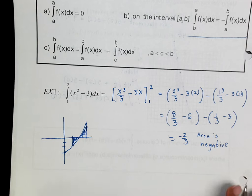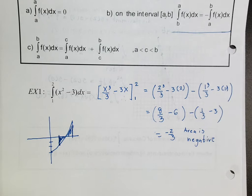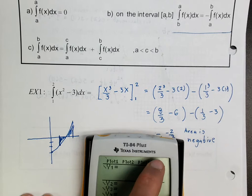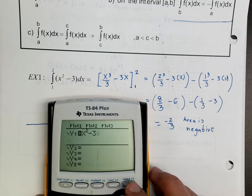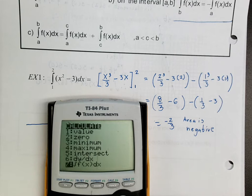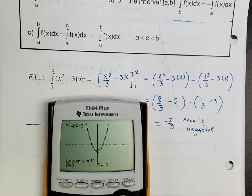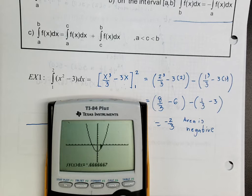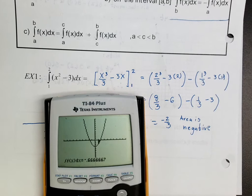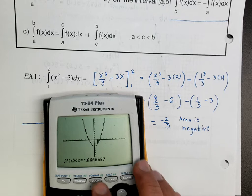Let me show you how to do it in the calculator — I'm only telling you this so you can check your answer. Put the original equation x² minus 3 into the calculator. Then go to second → calculate → option number 7. It will ask you for the lower limit: enter 1, press enter, then the upper limit: enter 2. The result is negative 0.6666, which is the same as negative 2/3.